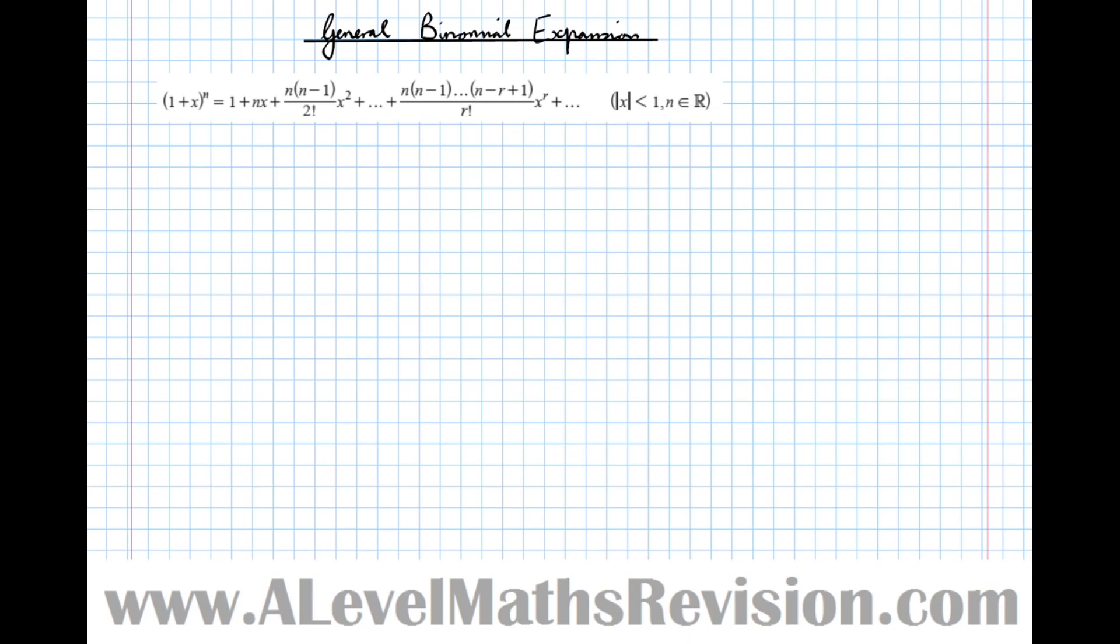So what we're going to do is write this formula out more fully so that we'll understand what's going on. We've got the formula being 1 plus nx plus n(n-1)x² over 2 factorial plus n(n-1)(n-2)x³ over 3 factorial plus n(n-1)(n-2)(n-3)x⁴ over 4 factorial and so on. We can see a pattern emerging here.